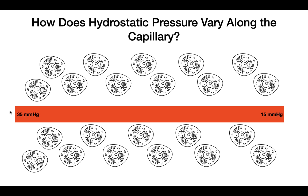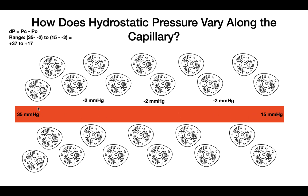The pressure outside the capillary — the ISF pressure — is going to be constant at around negative 2 mmHg. So what we see is that the hydrostatic pressure is actually going to be positive along the length of the capillary. At the beginning of the capillary, you take the difference between the pressure inside and outside, and that gives you a hydrostatic pressure of around plus 37 mmHg.